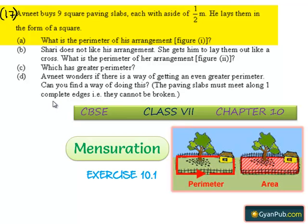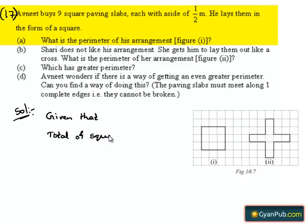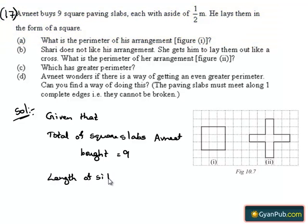Moving on to the 17th question. Avnit buys 9 square paving slabs, each with a side of half a meter. He lays them in the form of a square, and we are given to find the following parts. Given that the total number of square slabs Avnit bought is equal to 9, and the length of the side of each square slab is equal to half a meter.